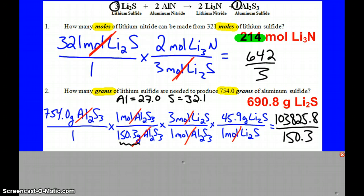And then the last molar mass, lithium is 6.9, two of those plus a 32.1 for sulfur, that's how I got 45.9. And then with the sig figs proper, you get 690.8 grams.